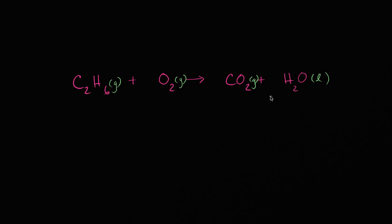Like we did in the example with ethylene, whenever you have several somewhat complex molecules involved, it's good to save the element that is in a molecule by itself for last. You can just tweak the dioxygen molecule to change the number of oxygens without any side effects on the number of carbons or hydrogens.